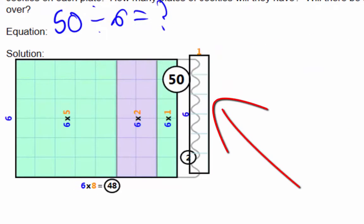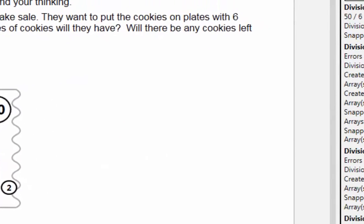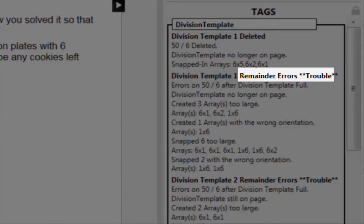For example, CLP can examine how a student used the division tool to see what she is struggling with. CLP notes that the student tried to add multiple arrays even when there was no space left in the division template, so suggests she may have trouble with remainders.